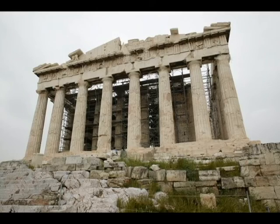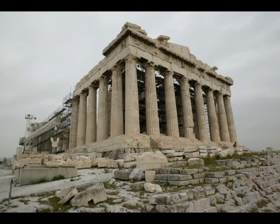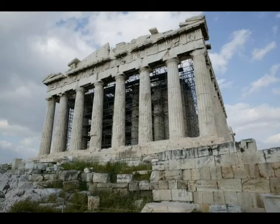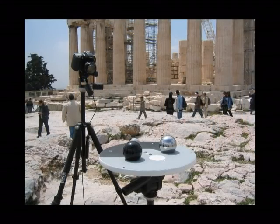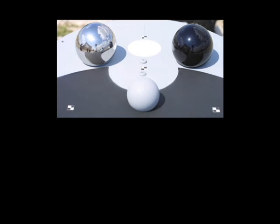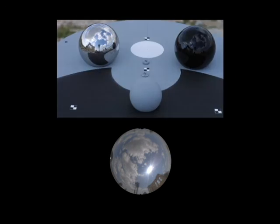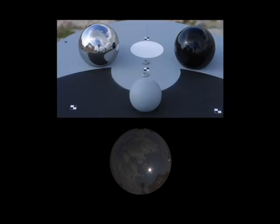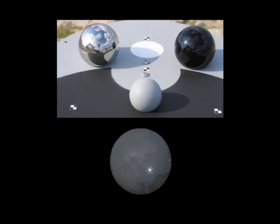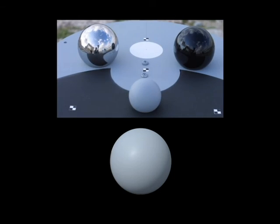We photographed the site with a calibrated digital camera under a variety of natural illumination conditions. For each photograph, we acquired an incident illumination measurement at the same time using a second camera. The illumination measurement device consists of three spheres: a mirrored sphere to capture illumination from the sky and clouds, a shiny black sphere to indicate the position of the sun, and a diffuse gray sphere to estimate the intensity of the sun.